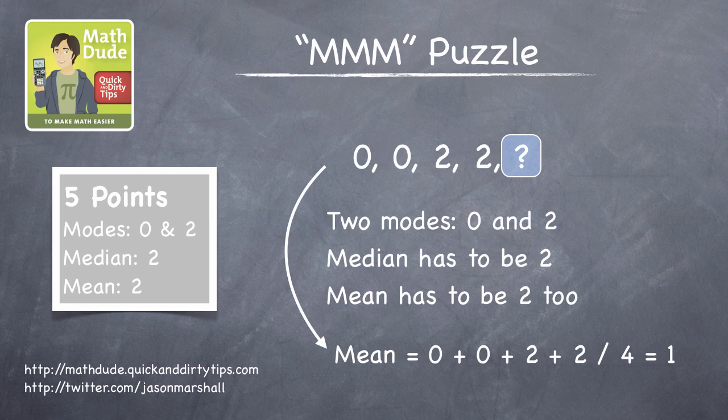That works out well for the median as well, because we know that our five numbers must look like 0, 0, 2, 2, something. So 2 is guaranteed to be the median, just as we need.